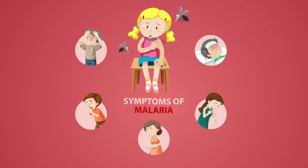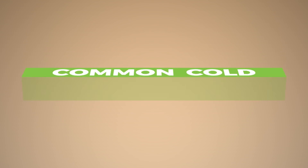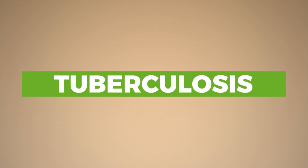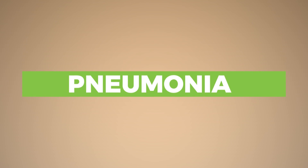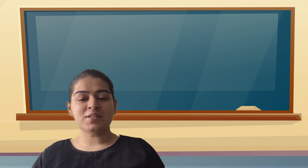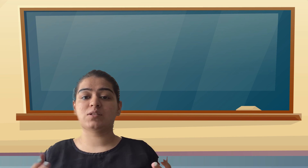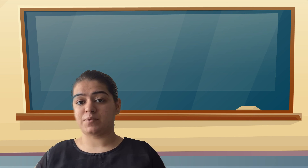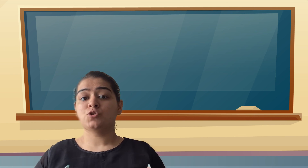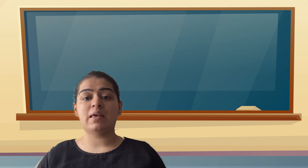Thus, these are all the ways communicable diseases are transmitted. Some common examples of communicable diseases are common cold, tuberculosis, and pneumonia. That's all for this chapter. I'm sure you will implement all these things we studied together with a better understanding, to change your life to a happy and healthy life. Bye!